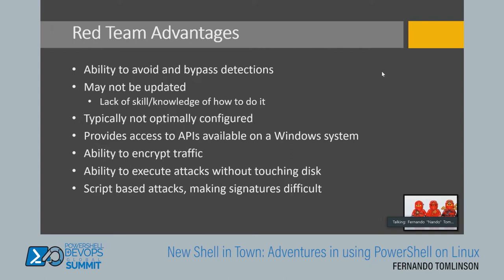Nation state actors and malicious actors are moving away from bringing custom toolkits to a compromised machine — they're utilizing what's already there. Like a friend who says 'don't bring anything, just show up' — that's the red teamer. They can just show up, utilize PowerShell and the API ecosystem. Red team can also operate code in a way that doesn't touch the file system; if it runs in memory, it's stealthier.